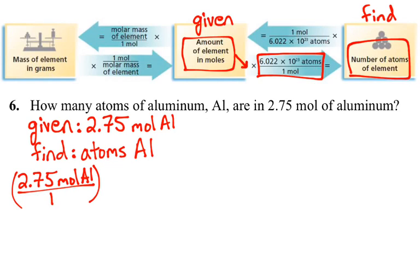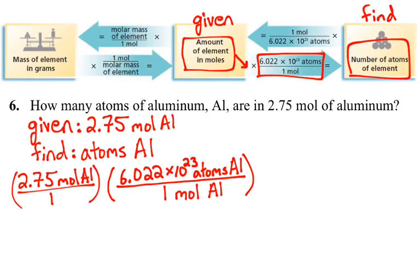So if we take the moles of our element and multiply it times Avogadro's number, that will give us the number of atoms in that particular element. So we follow this pathway. We write out 6.022 times 10 to the 23rd atoms of aluminum per every one mole of aluminum.